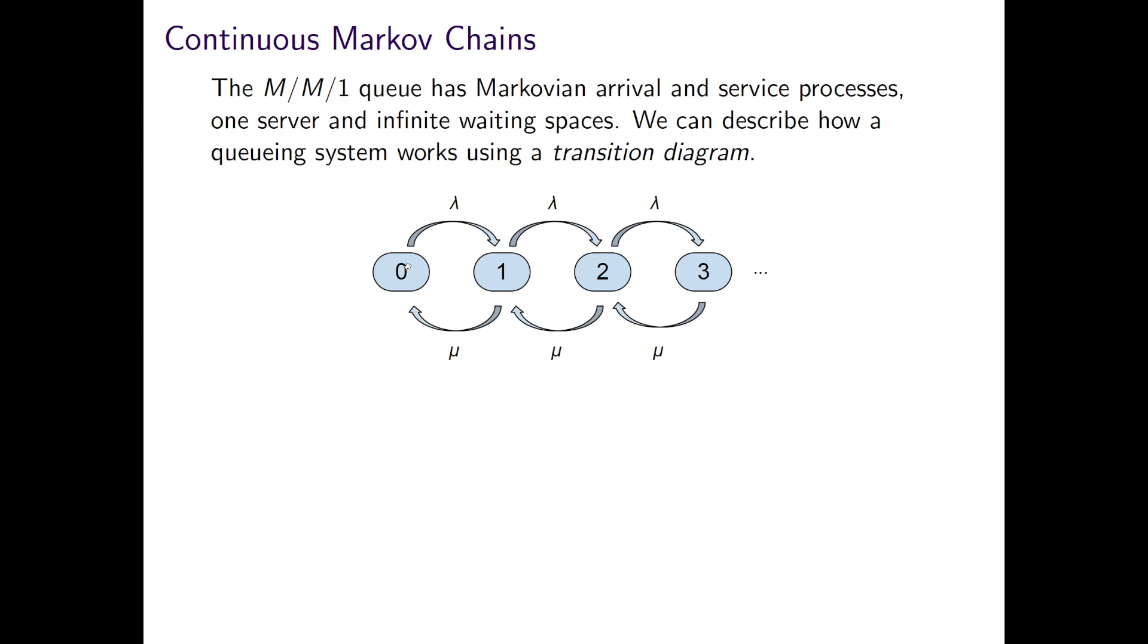To have one more person in the system, we have to have an arrival. And that happens in general with rate lambda. And to have one less person in the system, we need someone to depart and be served by the single server. And this happens at rate mu in general.